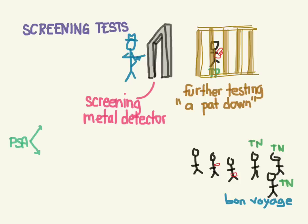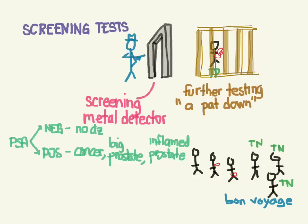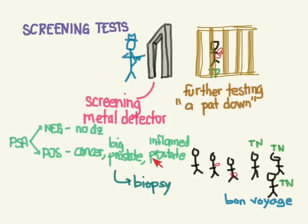One common screening test we do is a prostate-specific antigen test looking for prostate cancer. If the test is negative, they probably don't have the disease. But if it's positive, it could be due to many causes — it could be prostate cancer, or it could be BPH (just a big prostate), or prostatitis, an inflamed prostate. So they're going to need some other test to distinguish between all of these, and maybe they get a prostate biopsy — an invasive test which we want to avoid on the whole population.